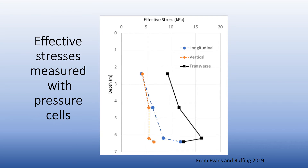The measured data show stresses in three dimensions at three different depths in the instrumented slurry trench cutoff wall. The transverse stress is much higher than the vertical or longitudinal stress, as expected because the sidewalls are squeezing the backfill inward. The vertical stress is the lowest of the three, and the longitudinal is the intermediate stress. The transverse is the major principal stress and the vertical is the minor principal stress. All stress values are very low — somewhere between 5 and 15 to 16 kilopascals.